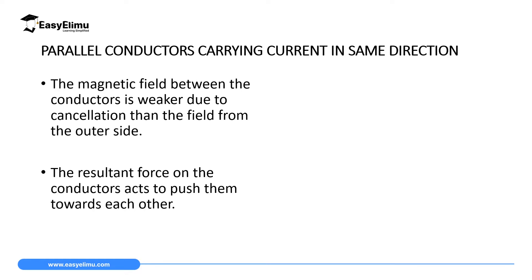If you have parallel conductors carrying current in the same direction, what's going to happen is that the magnetic field between the two conductors is going to be weaker due to the cancellation of the magnetic fields. Therefore, inside there will be a weak field, outside the conductor there will be a very strong field, and this will cause a resultant force which will make these two conductors move close to each other.